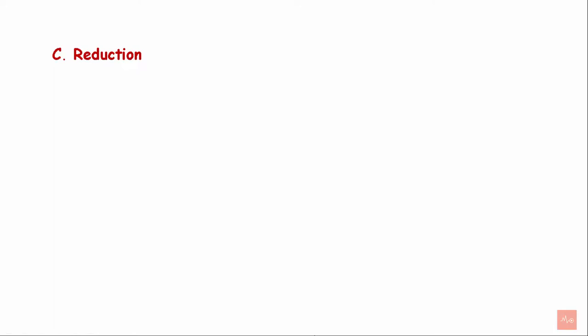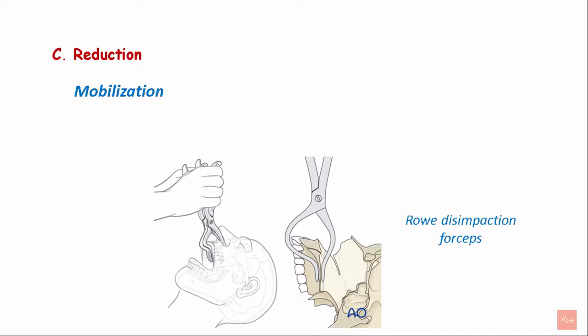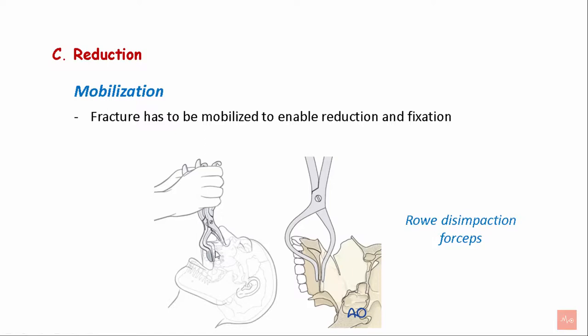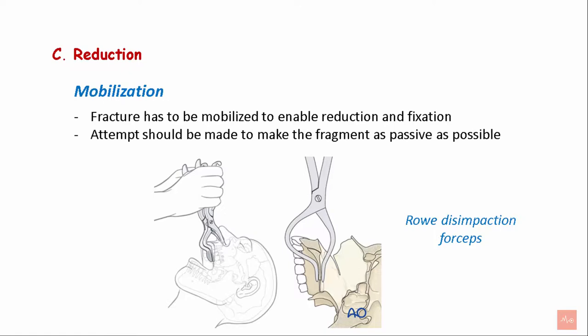Next is reduction of the fracture, which involves mobilization done through the use of Rowe's disimpaction forceps. These are special forceps used to mobilize the fractured segment, helping to enable reduction and fixation. The design of these forceps also prevents trauma to the maxillary anterior teeth. An attempt is made to make the fractured segment as passive as possible.